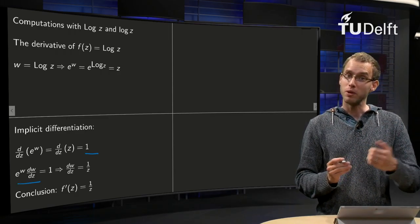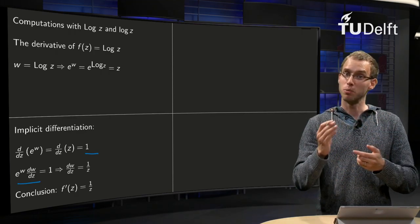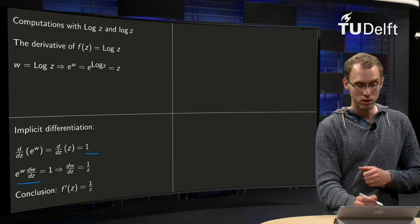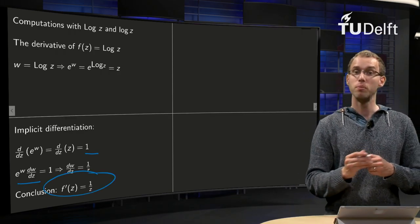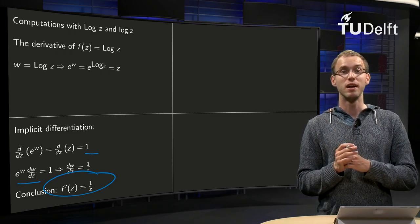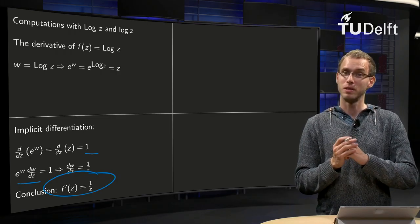This equals one, and we know that e to the power w equals z, so we find z dw dz equals one, so dw dz equals 1 over z. So we have our familiar rule: the derivative of the log of z is just 1 over z, exactly the same as with real analysis. That's nice.